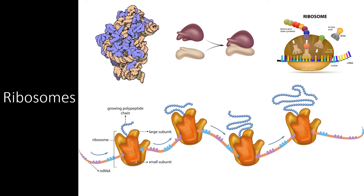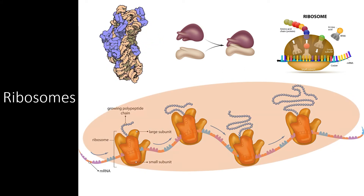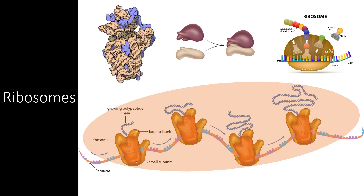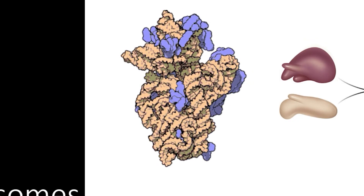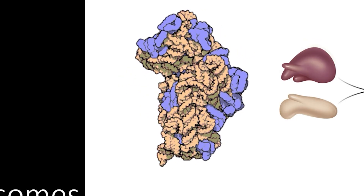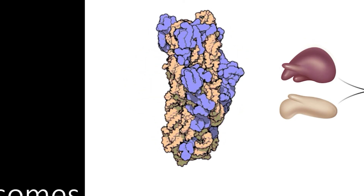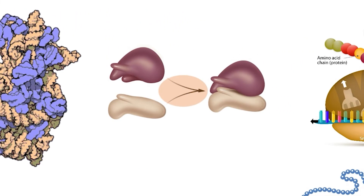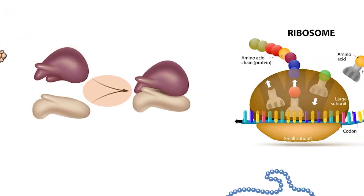Ribosomes are tiny cellular components made of ribosomal RNA and proteins. They complete the process of translation by connecting amino acids based on the information they receive from messenger RNA. Ribosomes are created out of multiple proteins and ribosomal RNA molecules, which weave together into a complex but very specific structure. Here you can see the blue areas of rRNA and the orange areas of protein. This is a single subunit. Most organisms use ribosomes that need two subunits. The subunits come together perfectly, allowing the ribosome to grab onto a piece of messenger RNA, and once found, the ribosome can begin its work.